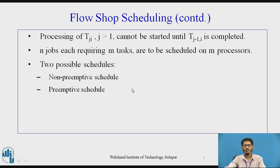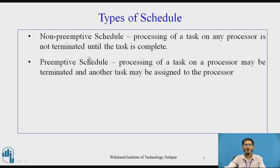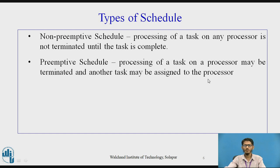The schedules that could be generated are: first, a non-preemptive schedule, and second, a preemptive schedule. A non-preemptive schedule is one where tasks are processed on a processor and are not terminated until the task is complete — once started, it will be completed without any other task interrupting it. In preemptive scheduling, the processing of a task may be terminated and another task may be assigned to the processor.